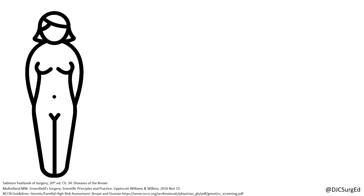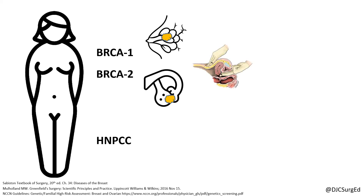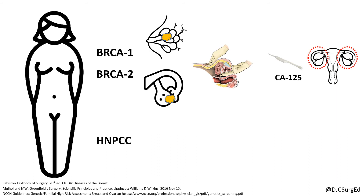Two important familial syndromes concerning gynecologic malignancies are BRCA1 and 2 and HNPCC. In addition to breast cancer, BRCA1 and 2 carry an estimated 40-60% and 10-15% risk of ovarian cancer, respectively. Screening includes a yearly pelvic exam with ultrasound and CA-125 levels starting at age 25. NCCN guidelines recommend risk-reduction BSO upon completion of childbearing.